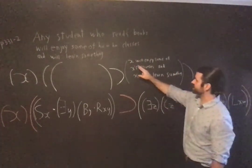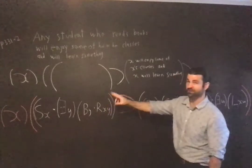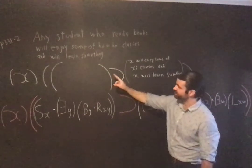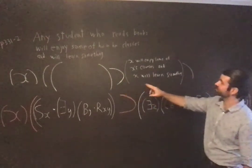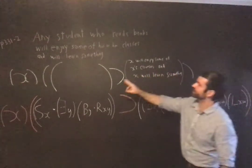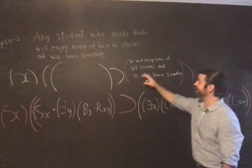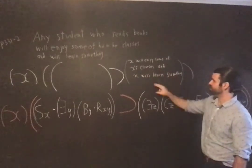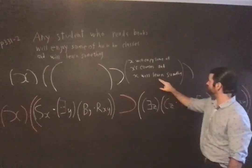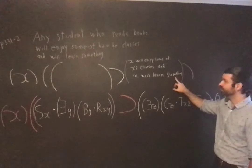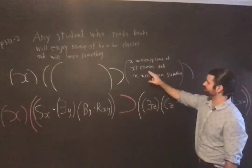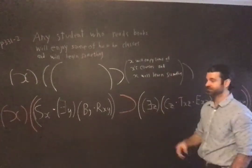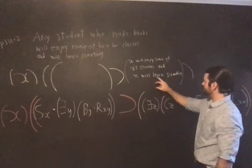So I rephrase that as X, right, so it's for all X. If X is a student and X reads books, then X will enjoy some of X's courses and X will learn something. That's the paraphrase. X will enjoy some of X's courses, some of X's courses genitive, and X will learn something.